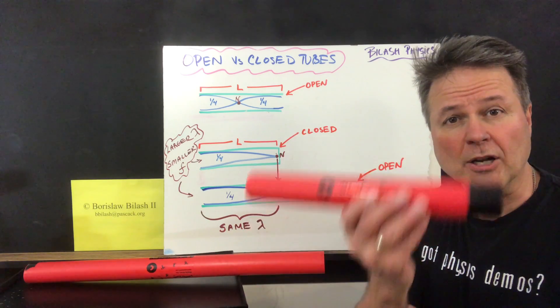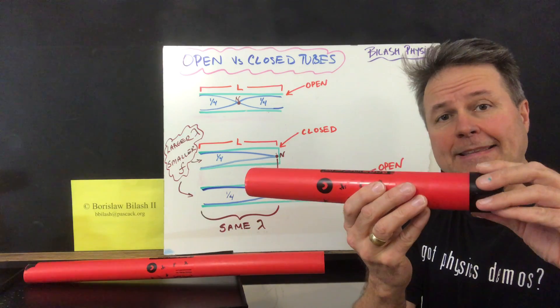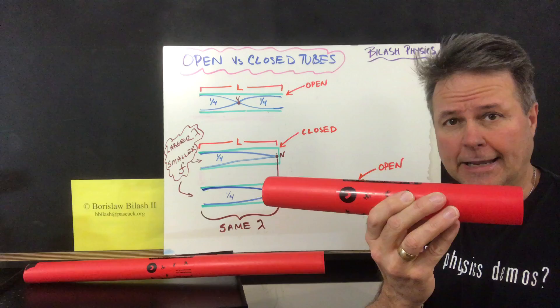In this lesson, I will explain why a closed-end tube has a lower frequency than an open-ended tube of the same length.